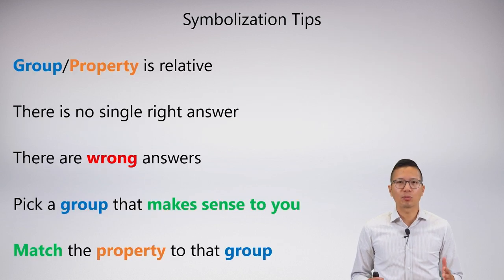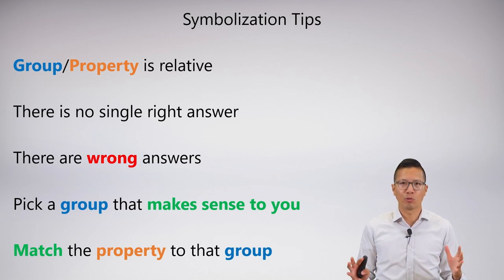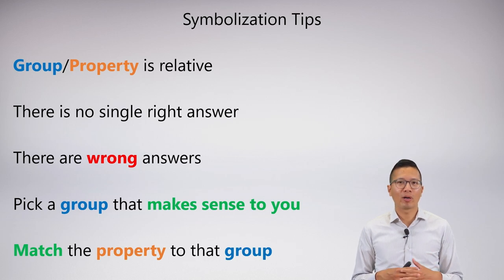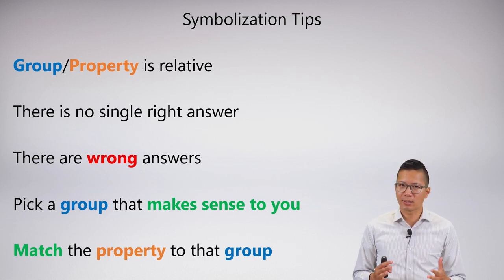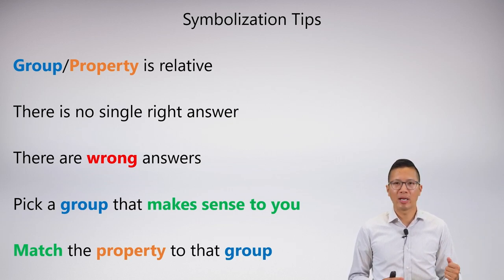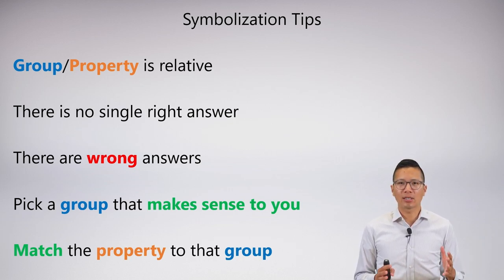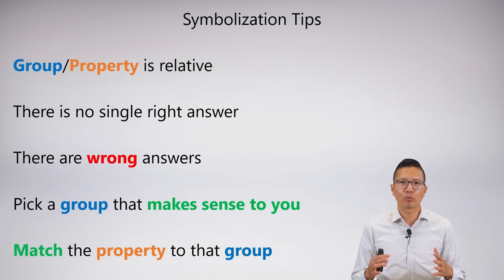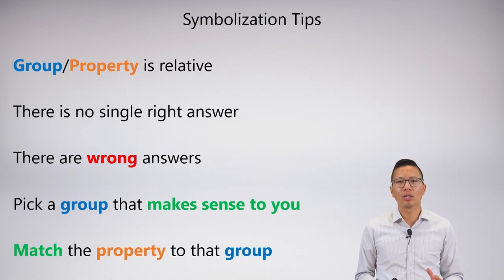When you're thinking about exportation, you realize that the group-property distinction is entirely relative — there's no single right answer. Of course there are lots of wrong answers, so you don't want one of those. But you can arrive at whatever answer makes sense to you — pick the group that makes sense, it doesn't have to match your neighbor. The property must fit with the group. You don't have to stress too much about the group-property distinction — it's relative, and exportation shows you that.